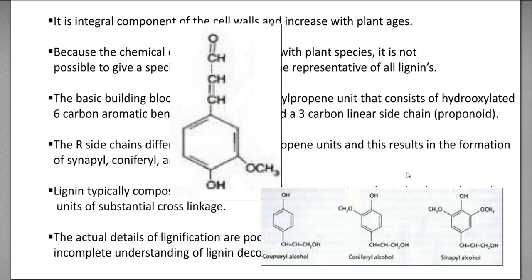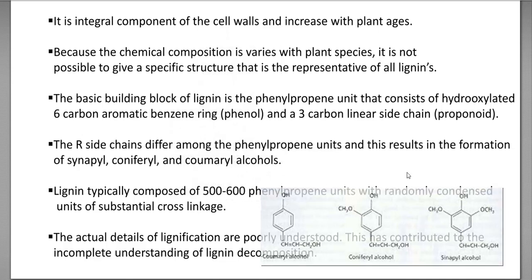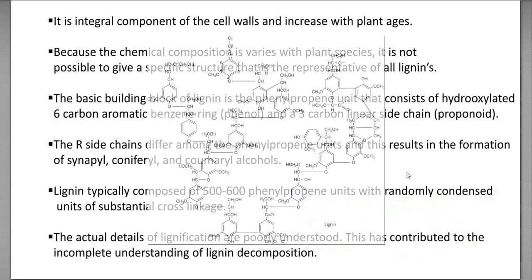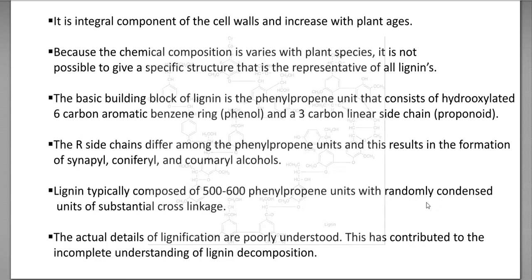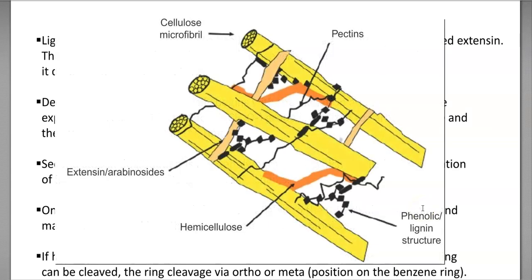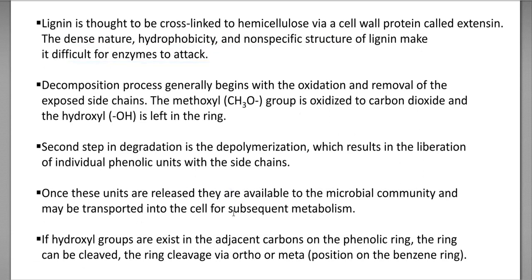The R side chains of this phenyl propane ring can be sinapyl alcohol, coniferyl alcohol, or coumaryl alcohol. Lignin is typically composed of 500 to 600 phenyl propane units that are randomly condensed with substantial cross-linkage. The actual details of lignification are poorly understood — how lignin is polymerized is not clear, which also creates problems in understanding how it is degraded. Lignin is thought to be cross-linked to hemicellulose via certain cell wall proteins called extensins. The dense nature, hydrophobicity, and non-specific structure of lignin make it the toughest molecule to be degraded by enzymes.